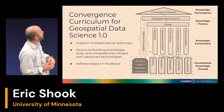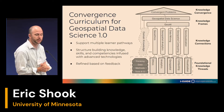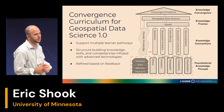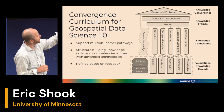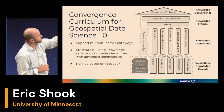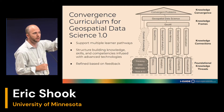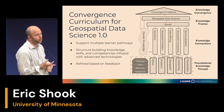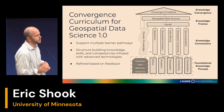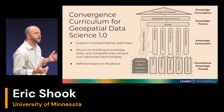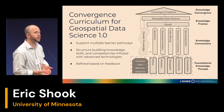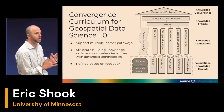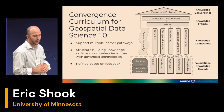We have version 1.0 of the convergence curriculum framework, which has been evolving through multiple listening sessions gathering feedback. At the very bottom we have foundational knowledge threads. Each foundational knowledge thread has its own way of thinking, its own ways of working with data, its own methods and tools — sitting in isolation from the others. For example, you can learn ethics without ever understanding computing. These five foundational knowledge threads are crucial to build up convergence learning for geospatial data science.